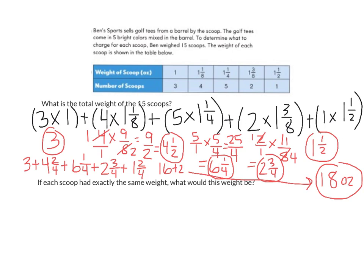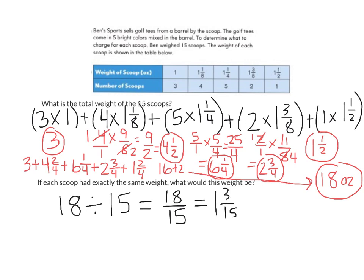Our final question asks: if each scoop had exactly the same weight, what would that weight be? We know the total weight is 18 ounces and there are 15 scoops, so we divide 18 by 15, which we write as 18/15. Since that's an improper fraction, we convert it to 1 and 3/15, then simplify by dividing by 3, giving a final answer of 1 and 1/5 ounces.